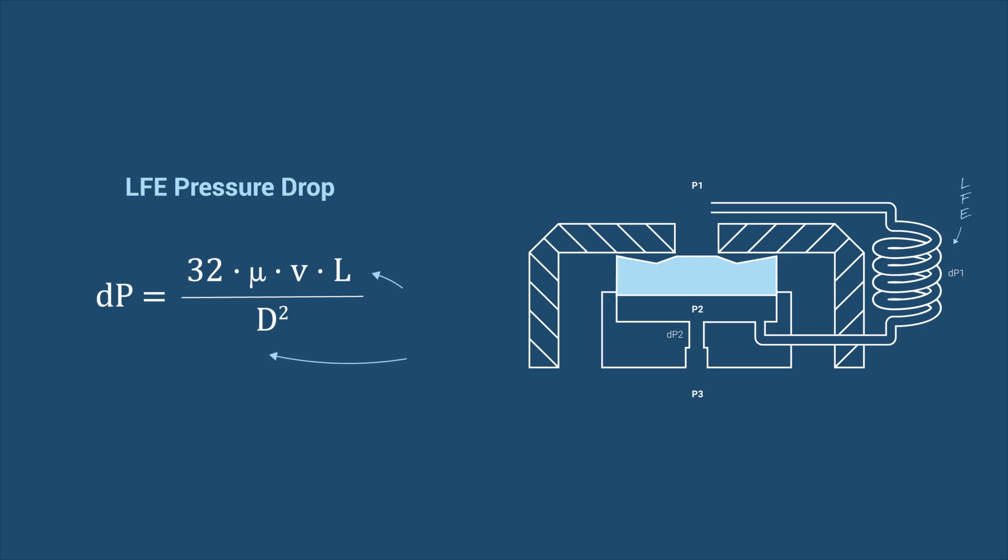The length and diameter of the LFE are geometrical constants, predetermined during manufacturing. If we change all of the constant components to C, we can also write the equation in this way. The pressure drop is proportional to C times viscosity times velocity.